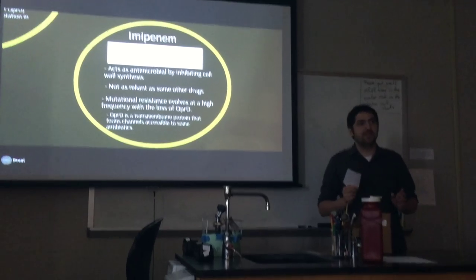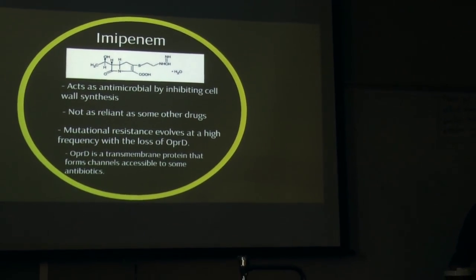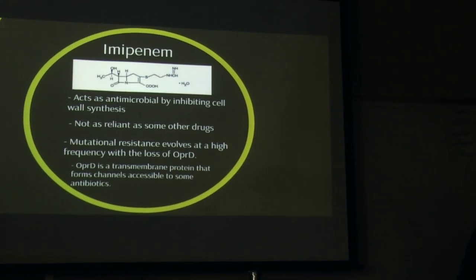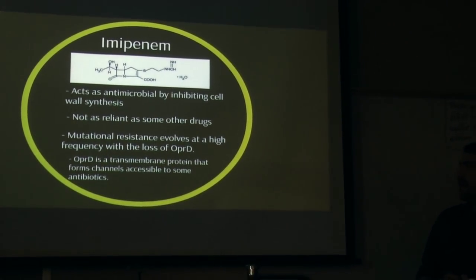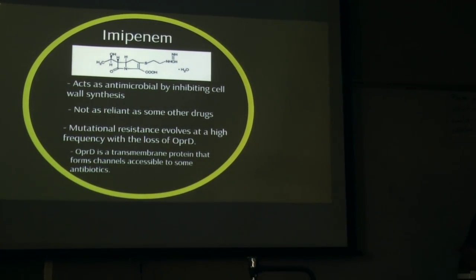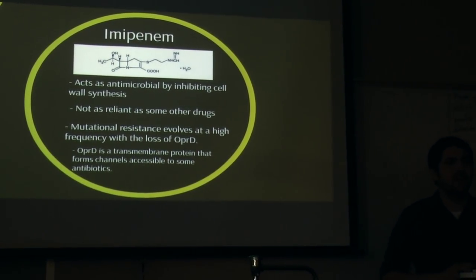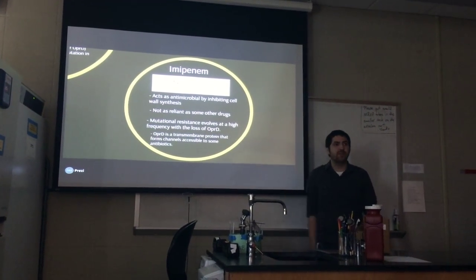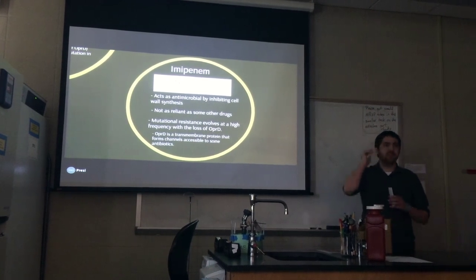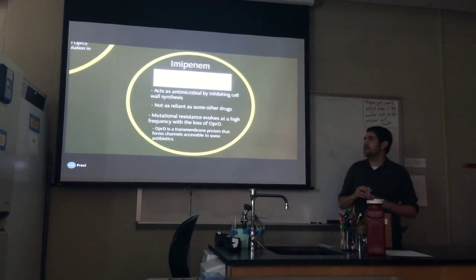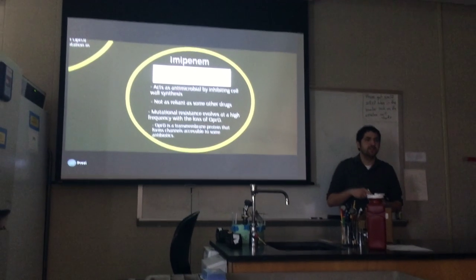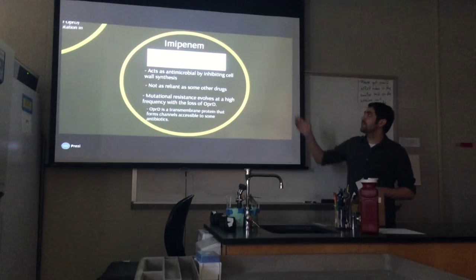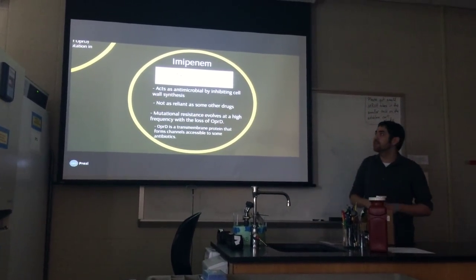Imipenem is another effective antibiotic that inhibits cell wall synthesis. However, it is not as reliable as some others because of a high rate of mutational resistance to it and the loss of the OprD porin — a transmembrane pore through which many antibiotics gain cell access. When Pseudomonas aeruginosa loses the OprD porin, imipenem can no longer enter the cell and becomes ineffective.